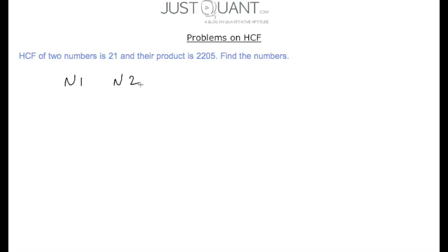In our next problem, it is given that the HCF of two numbers is 21 and their product is 2205. Find the numbers. To solve this we make use of an important property of HCF.